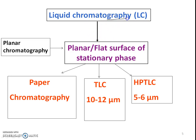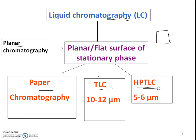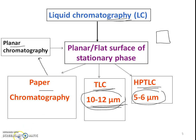Liquid chromatography means liquid is the mobile phase. In planar chromatography, a flat surface containing the stationary phase is used — paper, TLC, and HPTLC are all examples of planar chromatography. The differentiation between TLC and HPTLC is in terms of particle size: in TLC the typical particle size is 10 to 12 micrometers, whereas in HPTLC it is 5 to 6 micrometers.